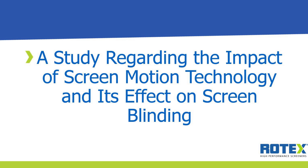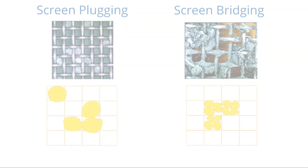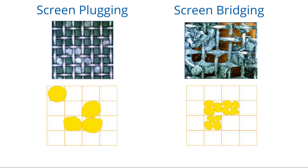Screen blinding is a common issue in production facilities across the world. Let's look at the root cause of material blinding during the screening process. Screen blinding is the reduction of the percentage of open area on the screen clothing due to openings being plugged with material. A screen can blind through bridging or plugging.